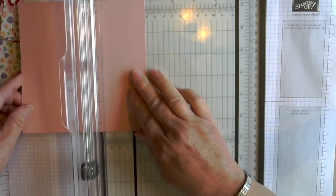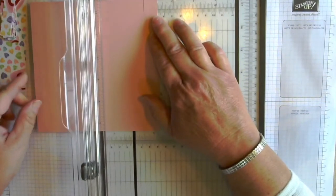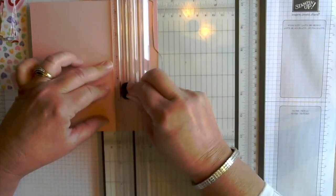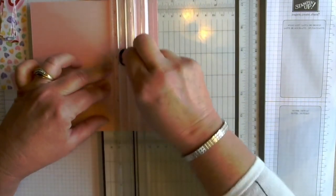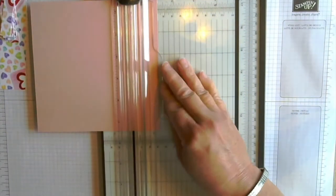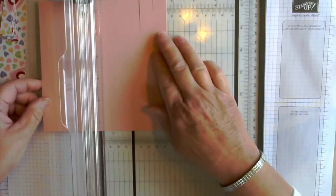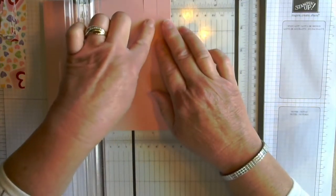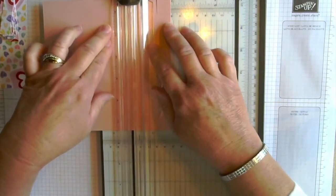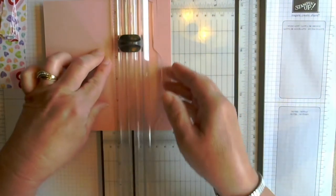Then we're going to go to one and a quarter and do that same thing. So from the edge to the score line, pick it up so you're not cutting the center from the score line to the edge. And then our last cut is going to be at one and seven eighths. So these are all 5 eighths inches wide. What we're doing is making three 5 eighths inch wide little tabbies.